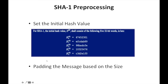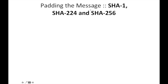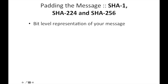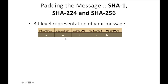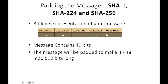The second pre-processing step involves padding the message based on its size. For example, given the message 'anish' using SHA-1, SHA-224, and SHA-256 — I have represented it in binary form. This message contains 40 bits, so I need to make it 512 bits long.